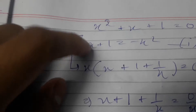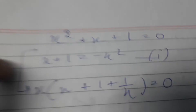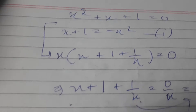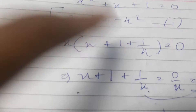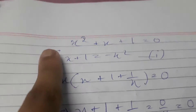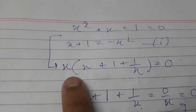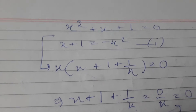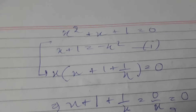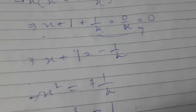Here is a more interesting mathematical trick you can try impressing your friends with. We have a polynomial x² plus x plus 1 equals 0. So x plus 1 equals negative x². That's obvious. And from the original equation, taking x common: x plus 1 plus 1/x equals 0.